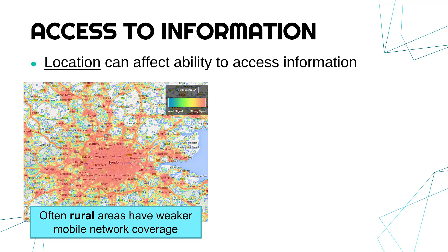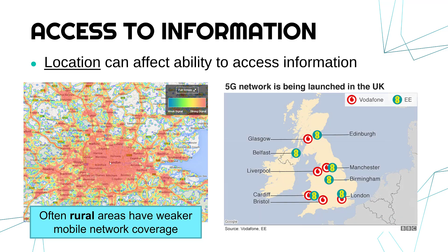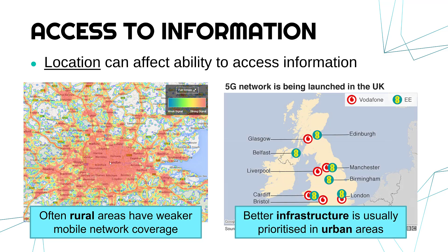Rural areas often have weaker mobile phone coverage, which affects your ability to do certain things on your phone. Understandably, cities — built-up areas — are often prioritised when it comes to upgrading infrastructure. The infrastructure refers to the components of networks. For example, 5G has been rolled out in cities, but not in the more rural areas. So you're lucky if you live near a city, less lucky if you don't.